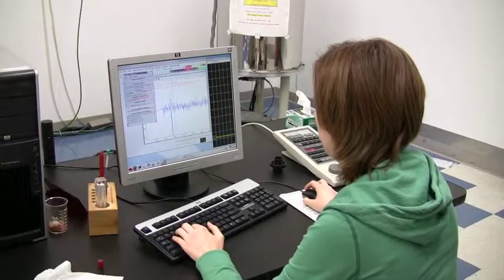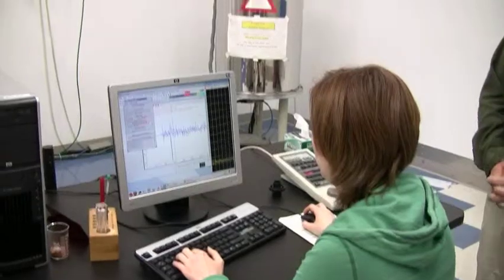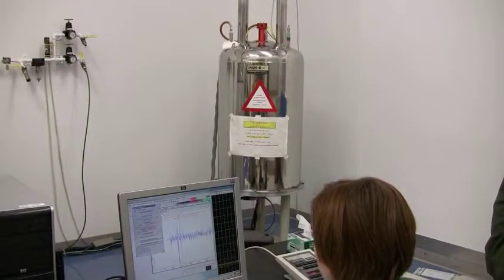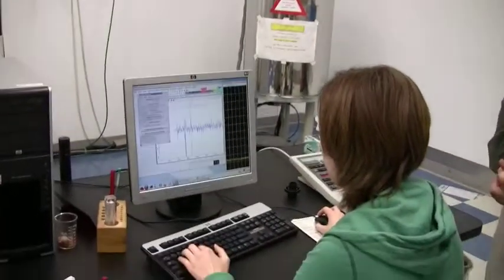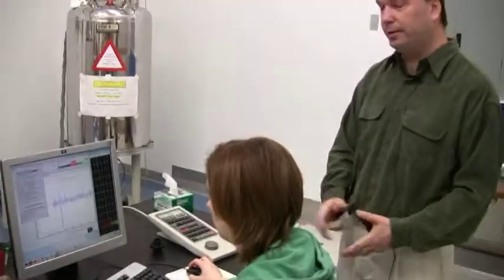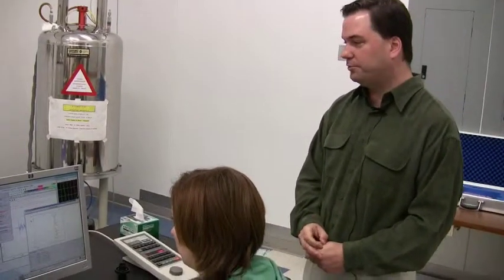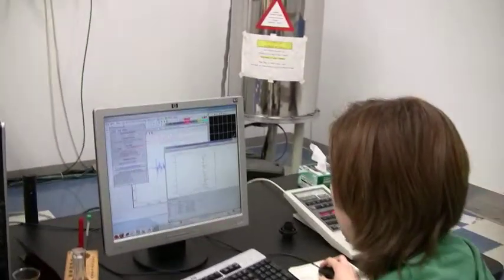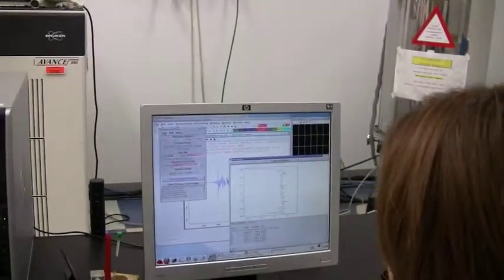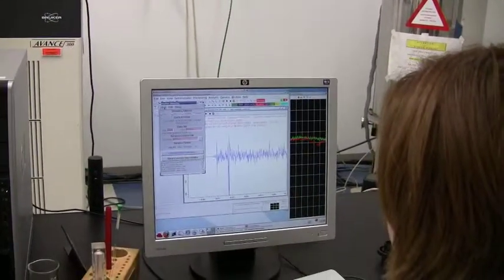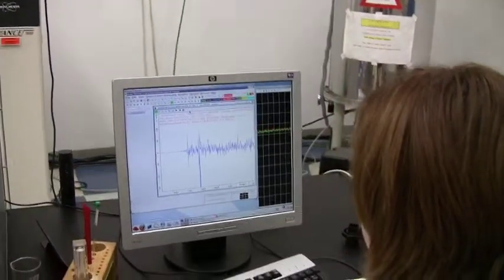We have a student that's currently acquiring a proton spectrum. What they're working on right now is called a process of shimming, and what that process involves is every time we put a sample in the magnetic field, we disrupt the homogeneity of the magnetic field, and so we have to re-optimize the homogeneity of the magnetic field.